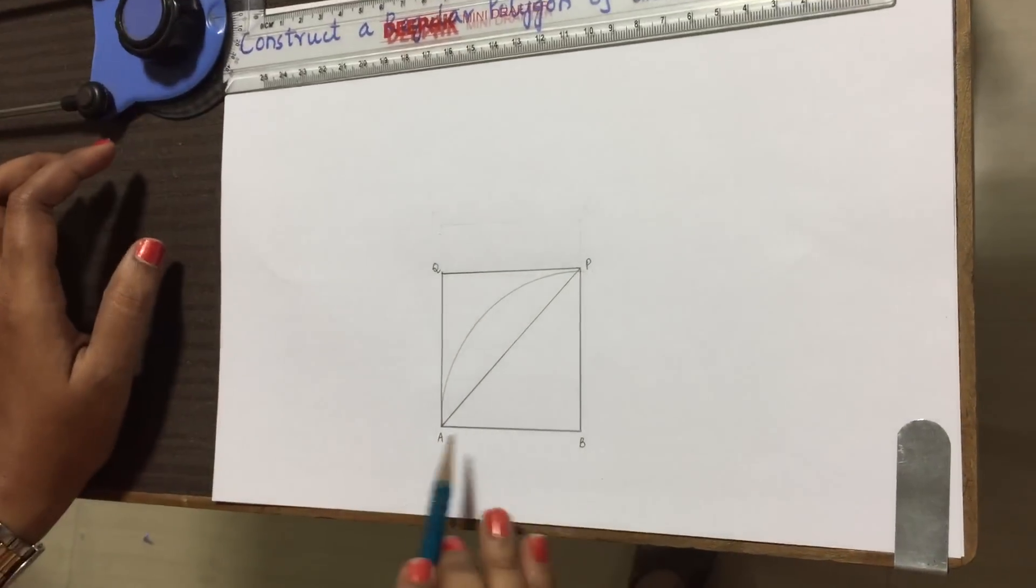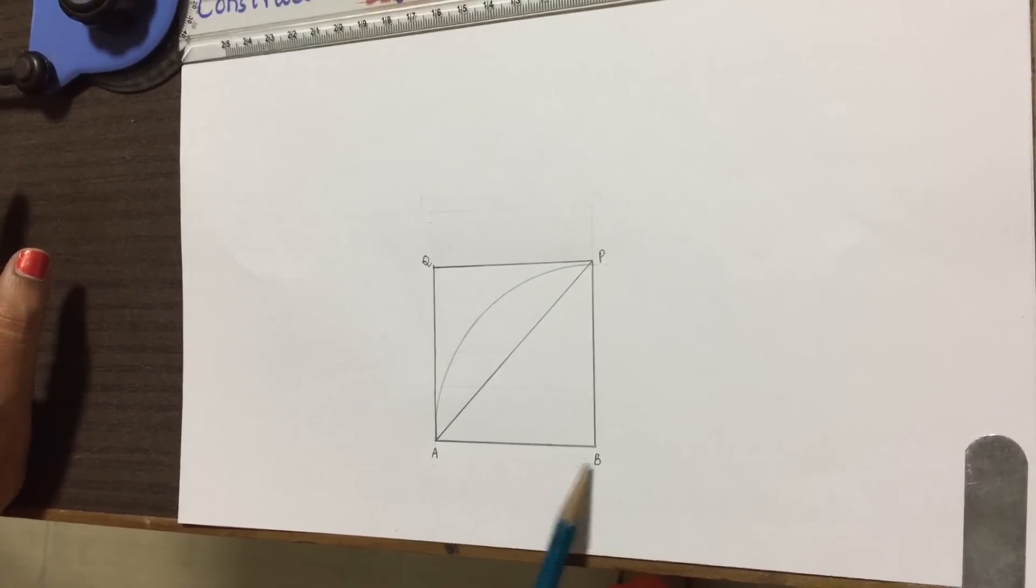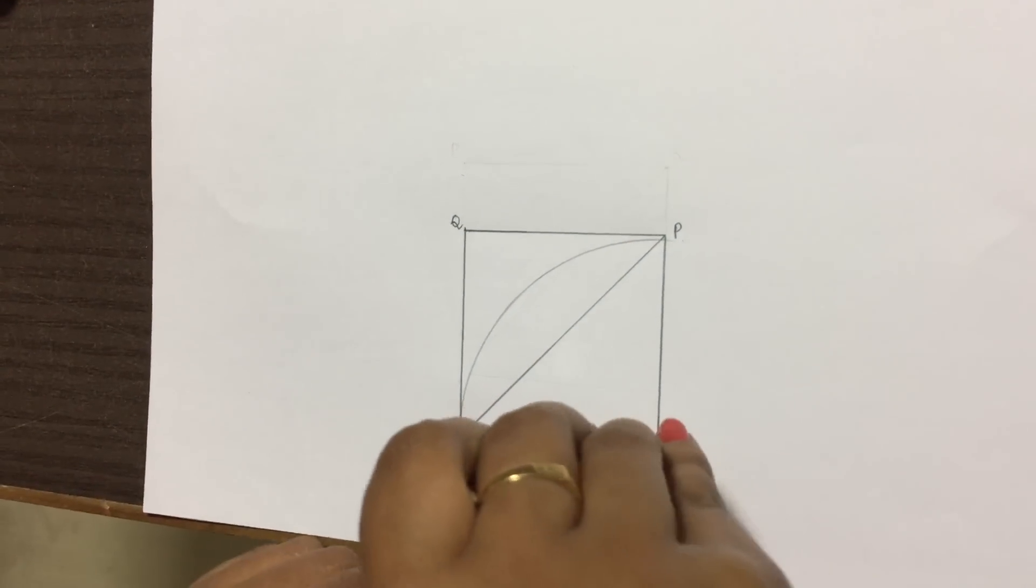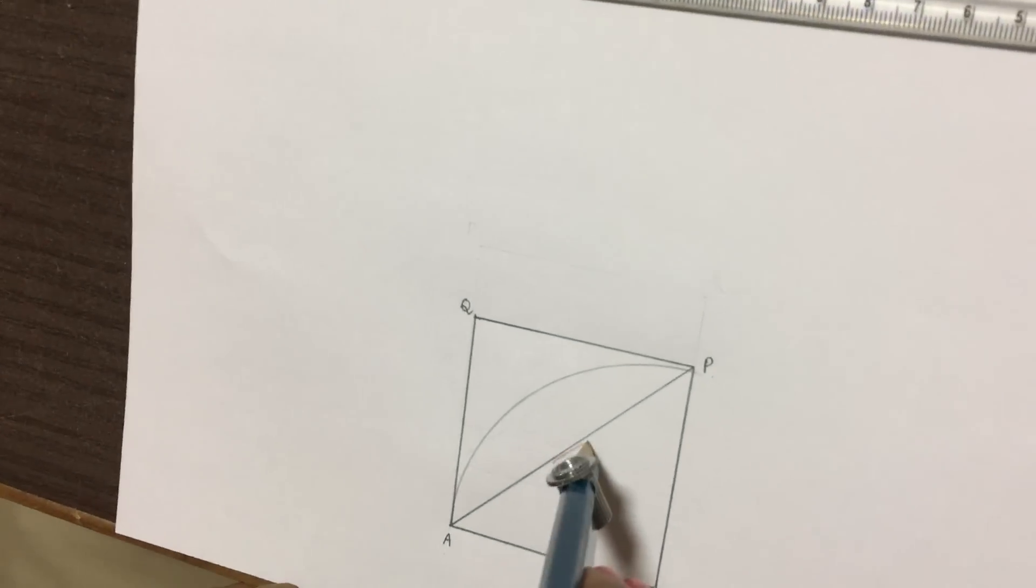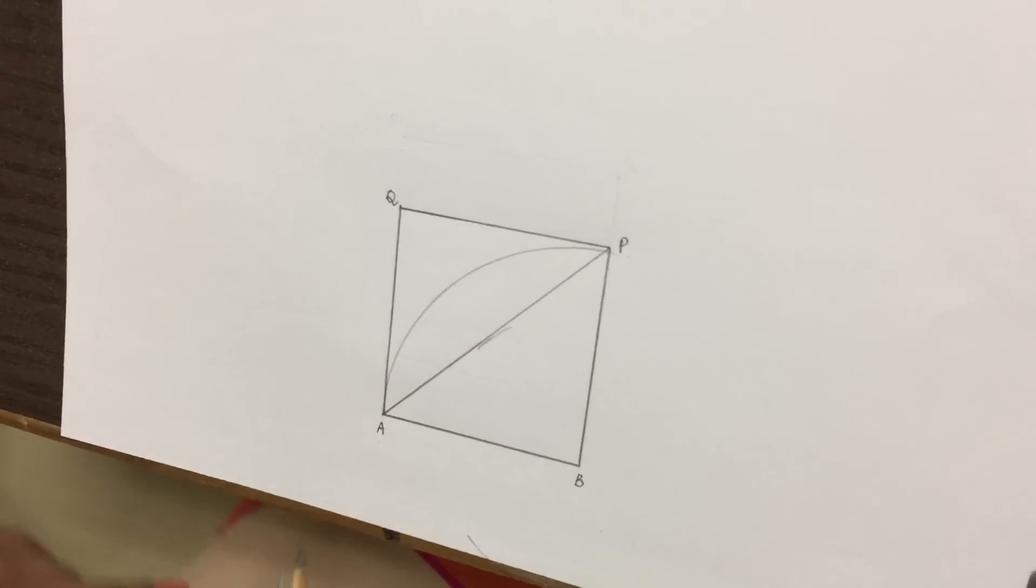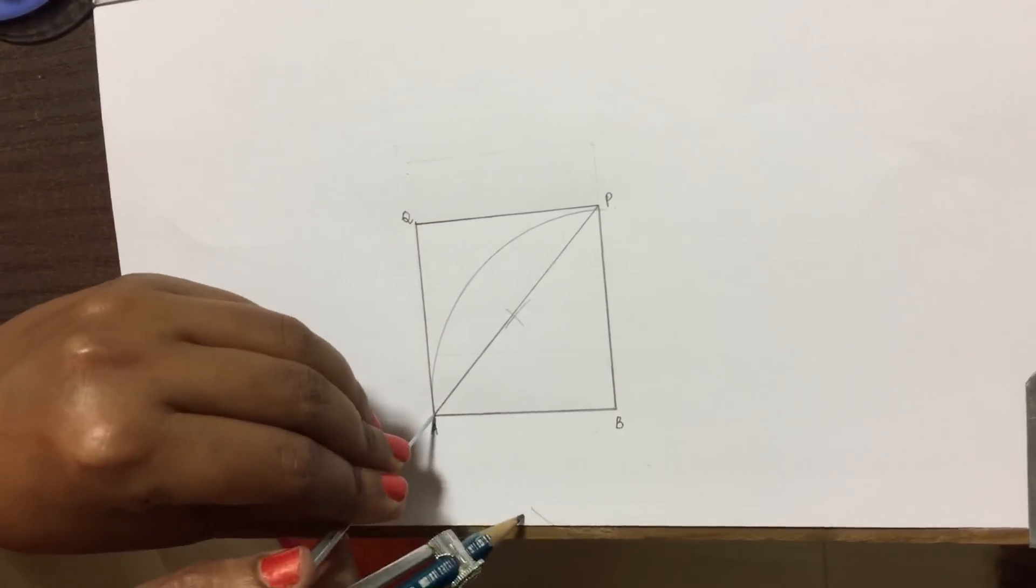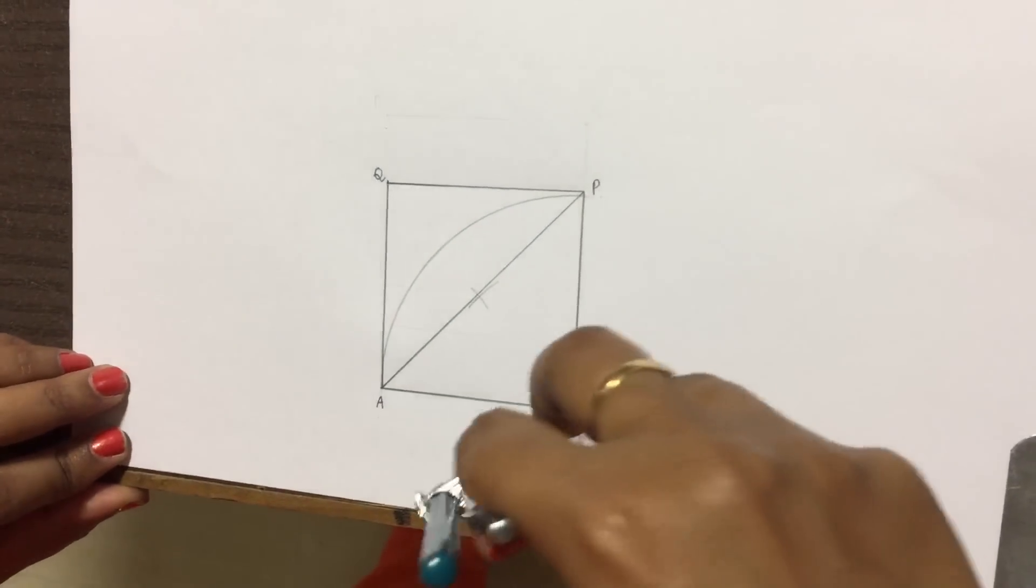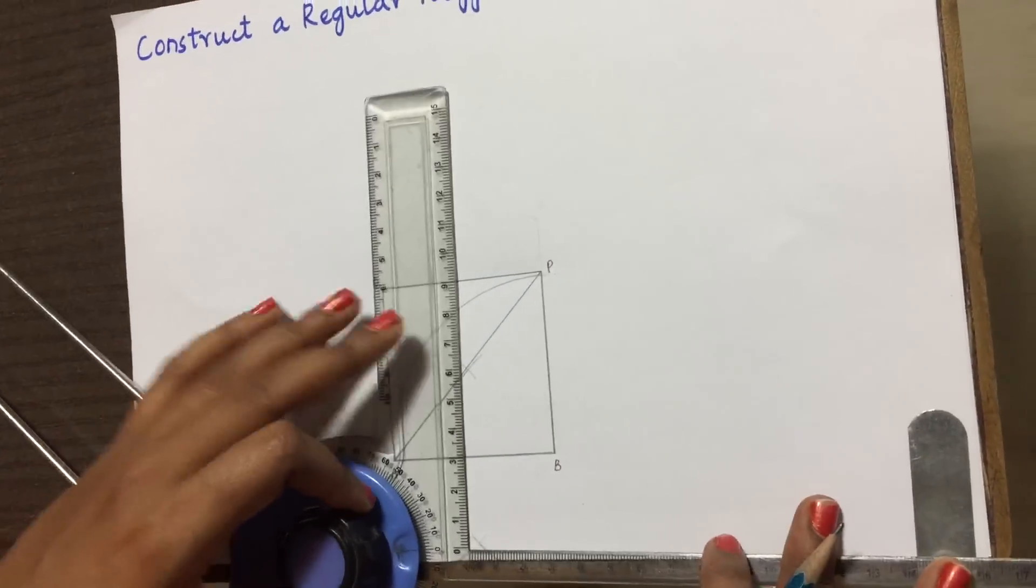Now divide the line AB into two equal parts, that is nothing but we need to perpendicular bisector the line AB. For that I'll take compass and with radius more than half of AB, draw an arc above and below, and with A as center draw an arc which is joining the previous one. Now join these two arcs.